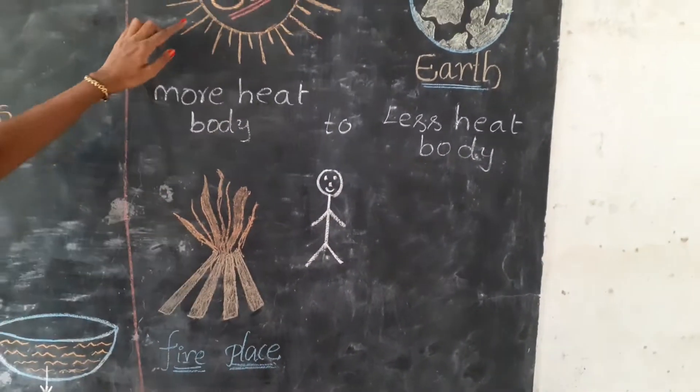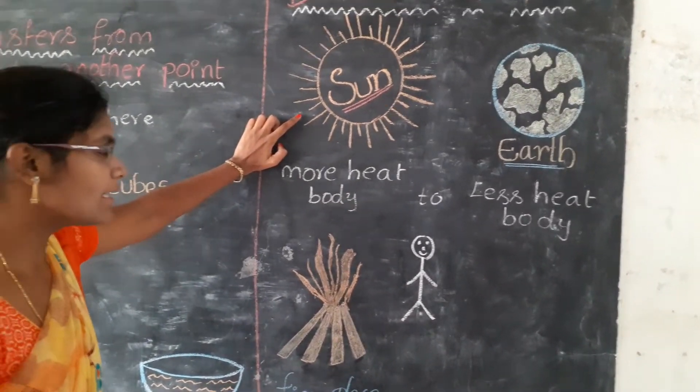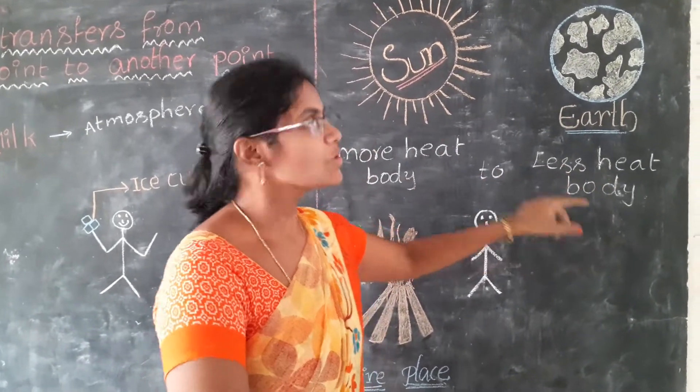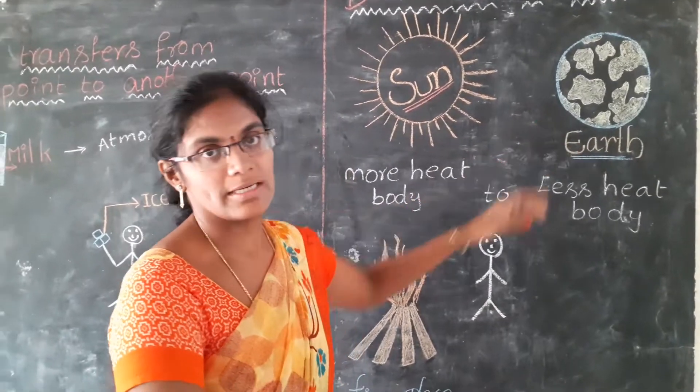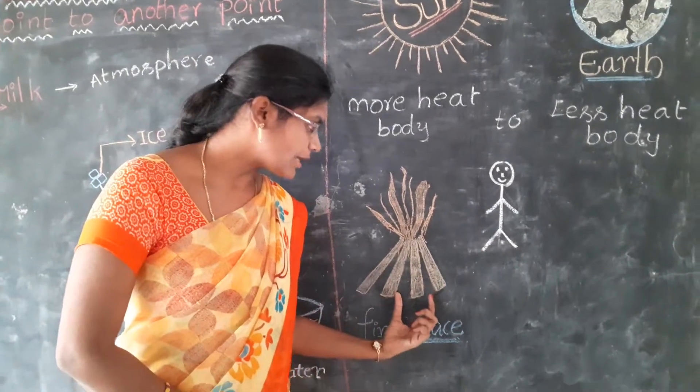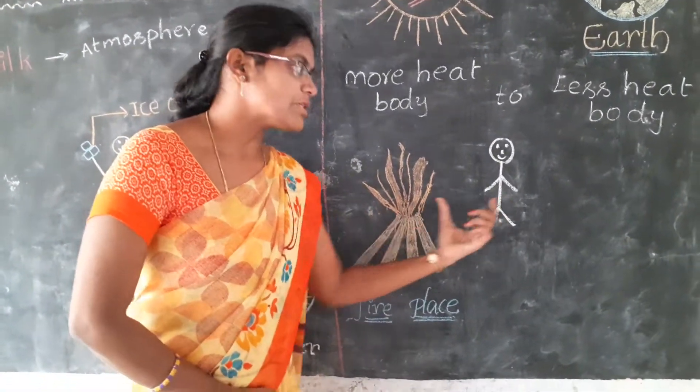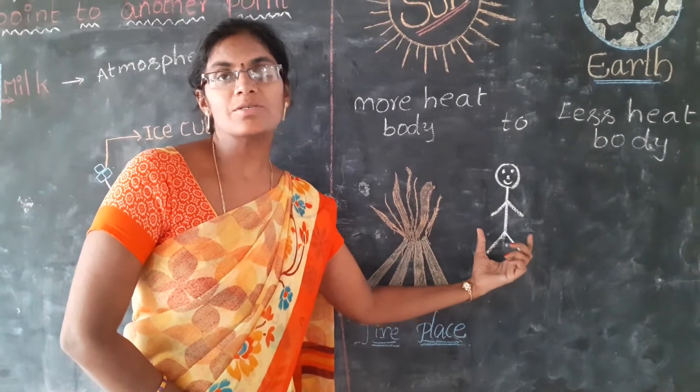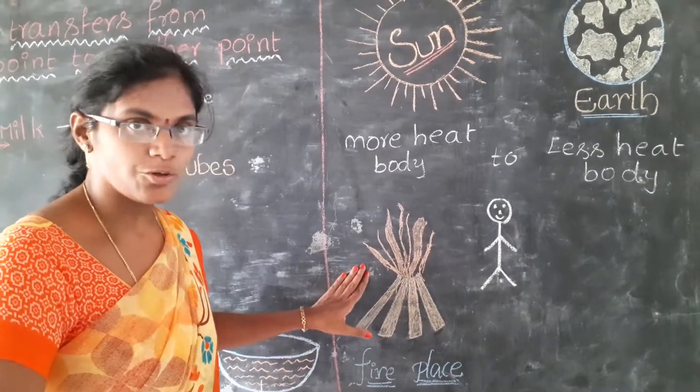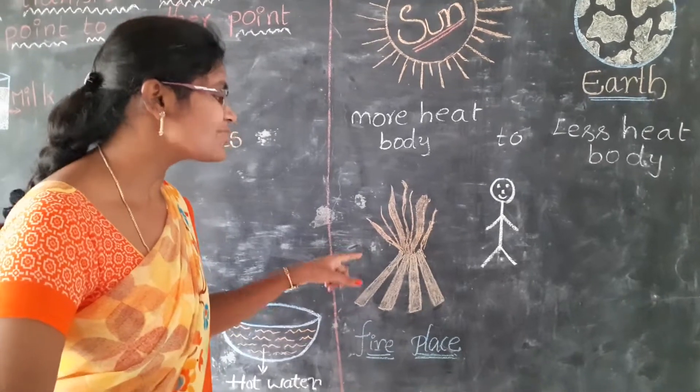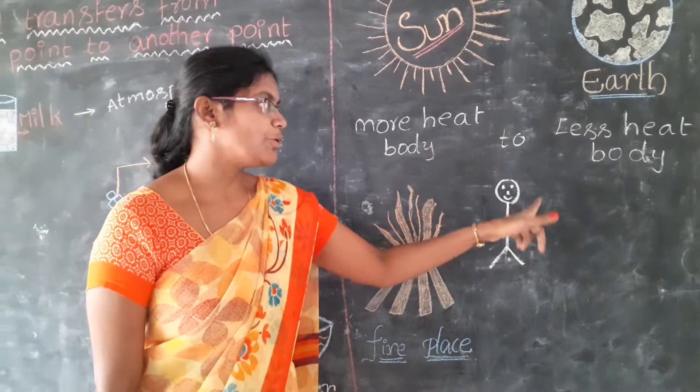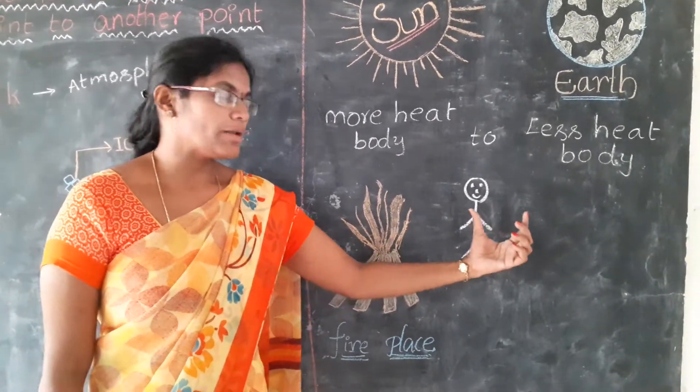So here sun is the source of heat. Sun contains more heat than earth. So that's why earth acts as a less heat body. So here the heat travels from sun to earth. Similarly, in case of fireplace and a person, if any person stands in front of a fireplace, the heat transfers from fireplace to person. That's why the person feels warm. Why heat transfers from fireplace to person? Because a fireplace is also a source of heat. It contains more heat than a person. So heat travels from more heat body to less heat body. Heat travels from fireplace to a person.